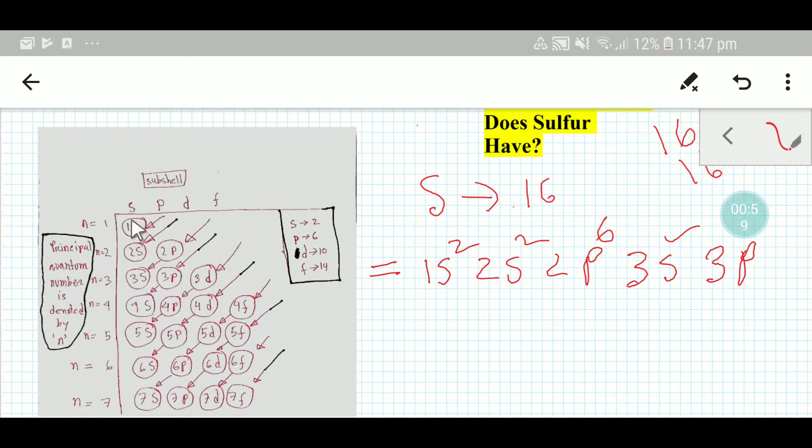First 2 electrons will go to 1s, then 2s will take 2 electrons, then 2p will take 6 electrons. So we are getting here 2 plus 6 is 8, plus 2 is 10.